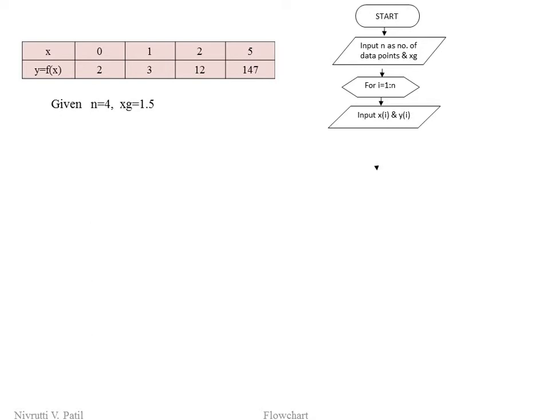So the initial value of x will be x1 and the final value will be xn. Similarly, the initial value of y will be y1 and the final value will be yn. When i equals 1, we input the first values x(1) and y(1). Then i is incremented, and we input x(2) and y(2). This process repeats until we get the last values of x and y, then we move to the next step.